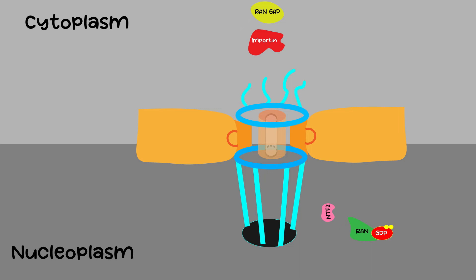Now RAN-GDP needs to become RAN-GTP again. This happens with the help of a protein called RAN GEF, which binds to RAN-GDP and stimulates it to release GDP and pick up GTP. RAN-GTP is functional again and can bind to importin to trigger it to release the cargo.